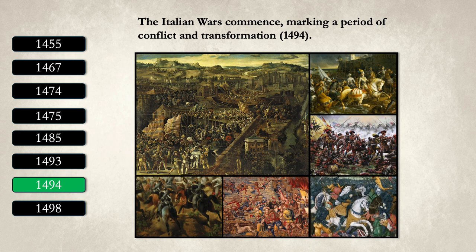In 1494, the Italian wars began, marking a period of conflict that would significantly transform Italy and Europe. These wars involved major European powers vying for control over the wealthy Italian city-states, leading to shifts in political alliances and power dynamics.